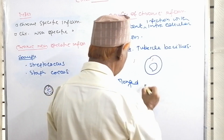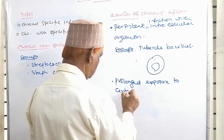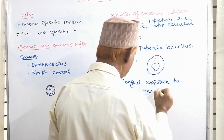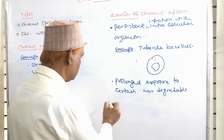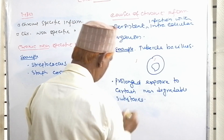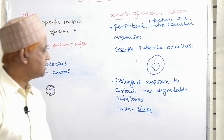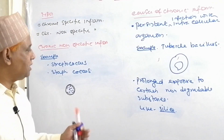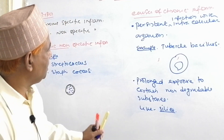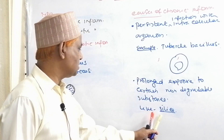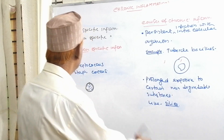Another cause is prolonged exposure to certain non-degradable substances. For example, silica. Silica is not degraded in our body within the cell because there are no enzymes to degrade it. So if anybody is exposed for a long time to silica, it will lead to silicosis. This is an example of chronic inflammation caused by prolonged exposure to certain non-degradable substances.